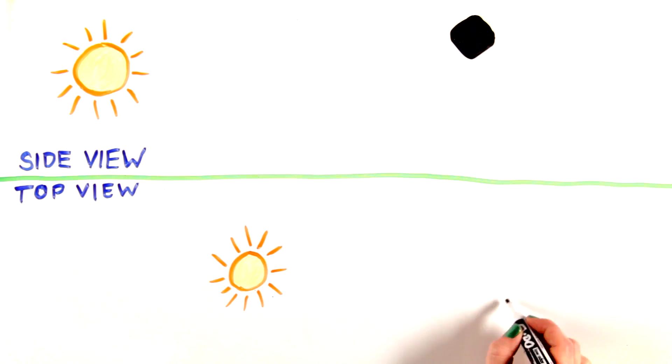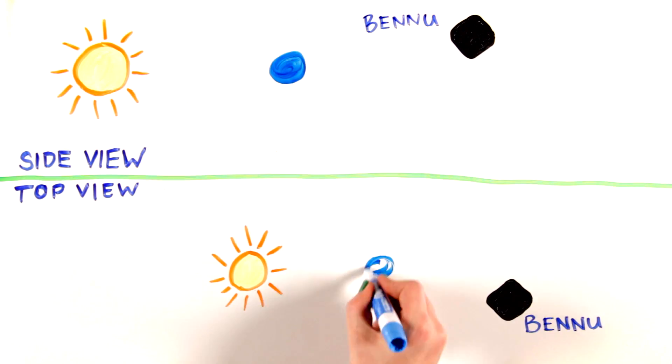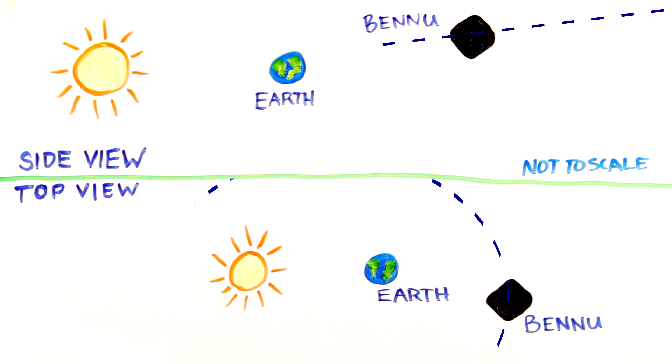Understanding Bennu's gravitational environment will come in handy when our OSIRIS-REx spacecraft is ready to head for Bennu. Bennu orbits the sun at a different inclination or angle than the Earth. After launch, our spacecraft will fly by the Earth using the Earth's gravity to make an inclination change before continuing on its way toward Bennu.